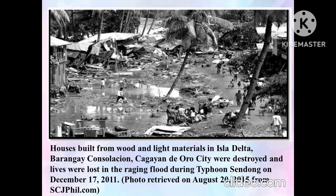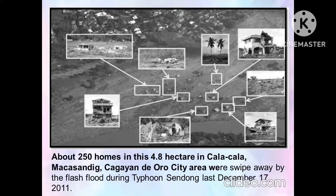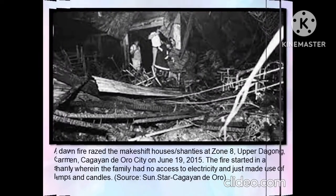One picture shows a flood during Typhoon Sendong on December 17, 2011. Another picture shows about 250 homes in a 4.8-hectare area in Kalakala, Makasindig, Cagayan de Oro City, which were swept away by the flash flood caused by Typhoon Sendong last December 17, 2011.